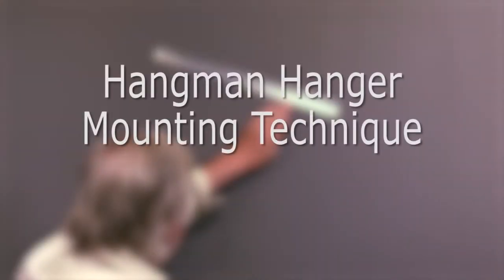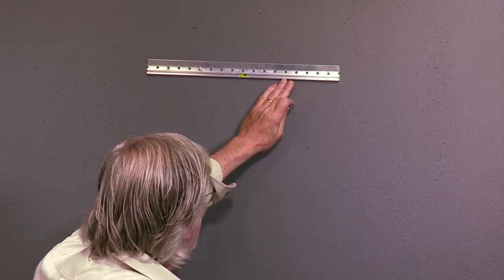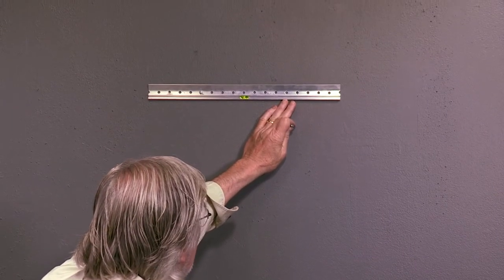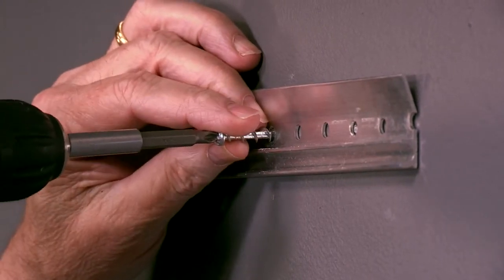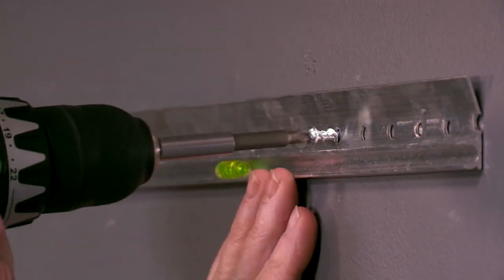Derue Easel Hangman Hanger Mounting Technique. Place the wall bracket on the wall using the level provided to level the bracket. Attach to the wall using the provided screws that came with your hardware. They will be self-anchoring screws.